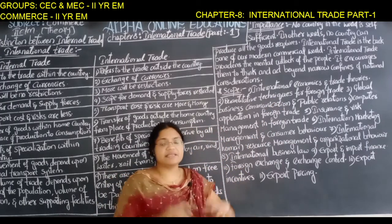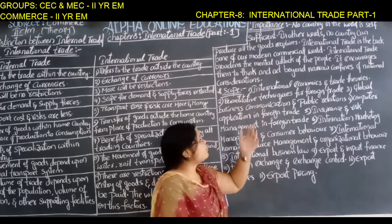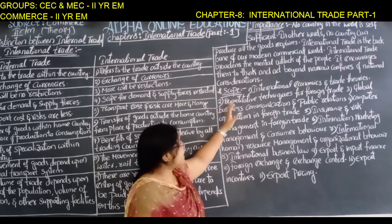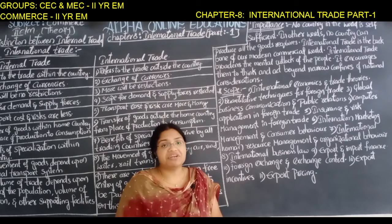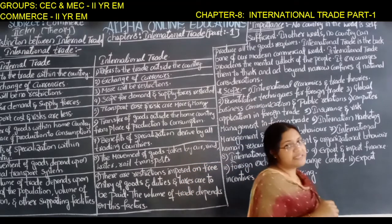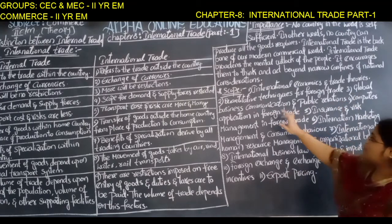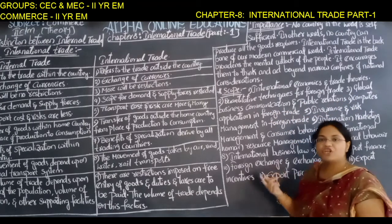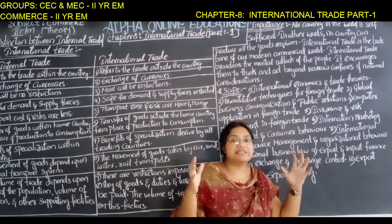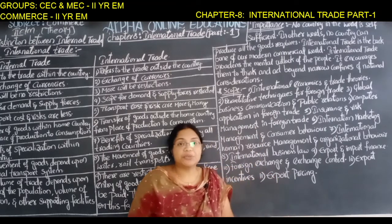The scope of international trade includes: international economics and trade theories — there are certain trade theories on which trading is based. It also includes quantitative techniques for foreign trade, used to solve problems arising in research. Additionally, global business communication and public relations are covered — international trade spans the entire globe, requiring communication and relationship-building with people of several countries.